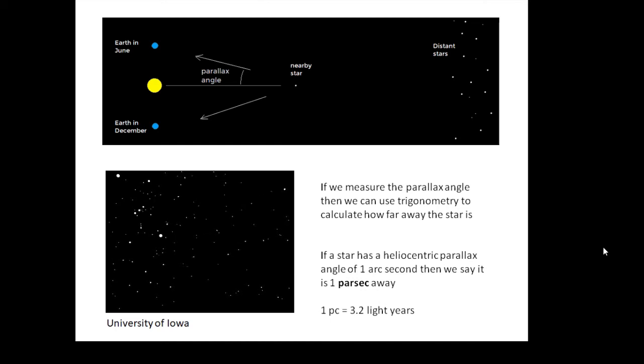So one parsec is a parallax angle, a heliocentric parallax angle, of one arc second. And one parsec is about 3.2 light years. So a parsec is a measure of distance based on heliocentric parallax.